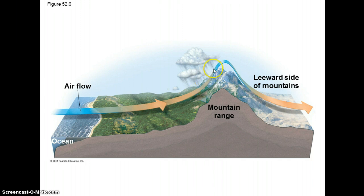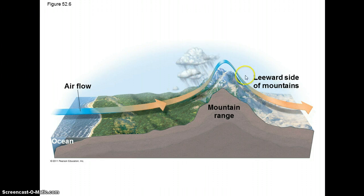As the air goes over the mountain and sinks on the other side, it warms up as it goes to lower elevations, having dropped a lot of its moisture on the windward side. On the other side — the leeward side of the mountain — it's relatively dry. This is known as the rain shadow effect: the windward side of the mountains gets lots of precipitation and the leeward side gets a lot less.